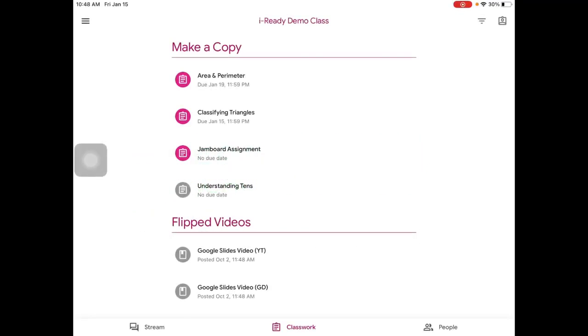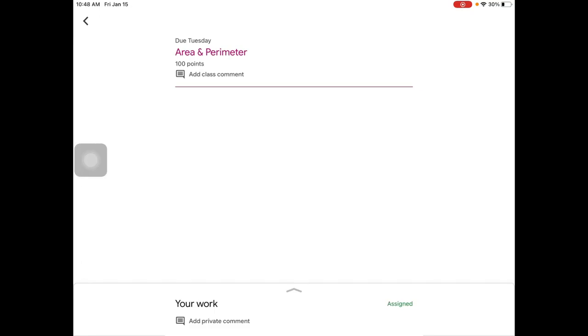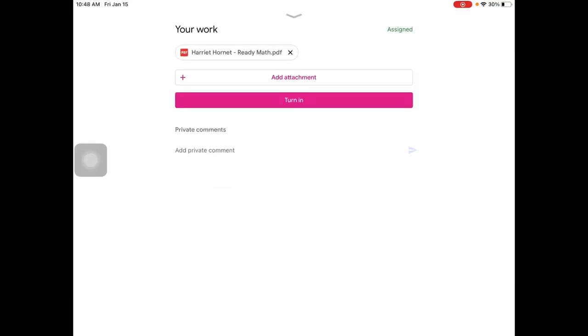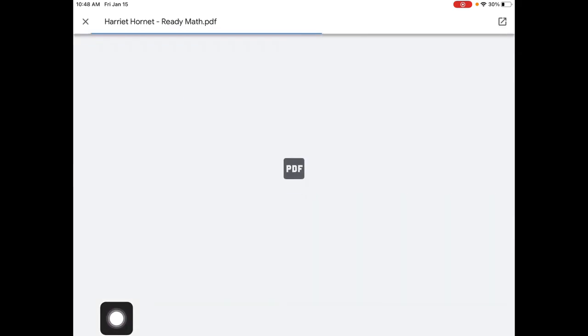On an iPad, students will open up Google Classroom and find the assignment. When they click on that, they'll be able to select your work and they'll see that the PDF is right here. When they select the PDF,